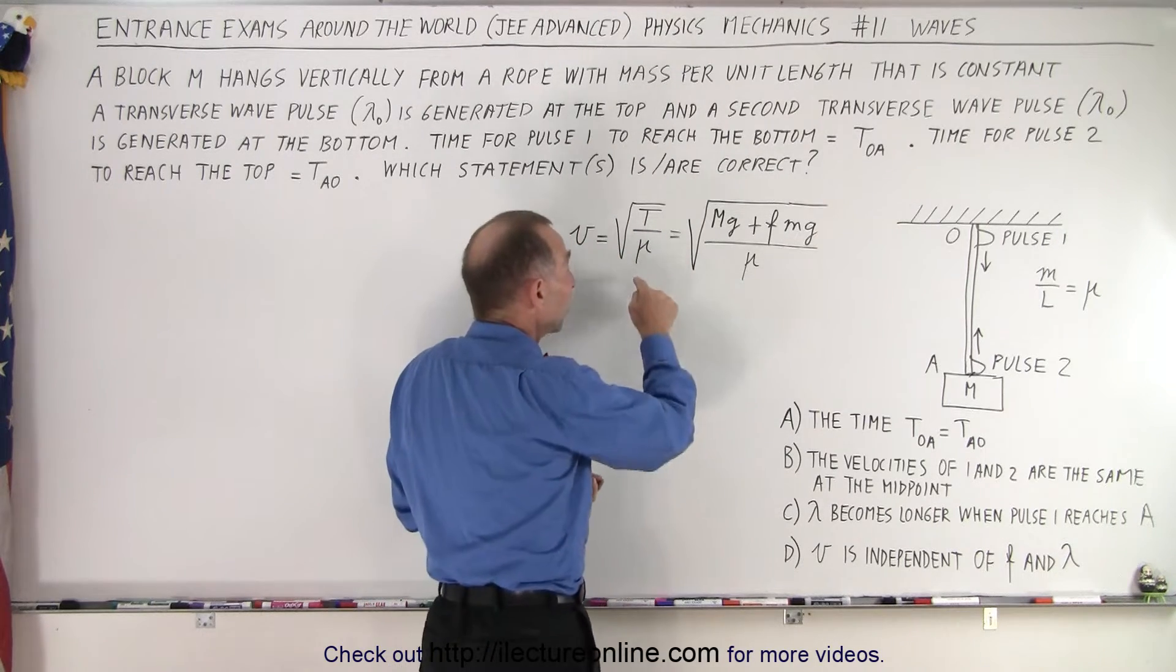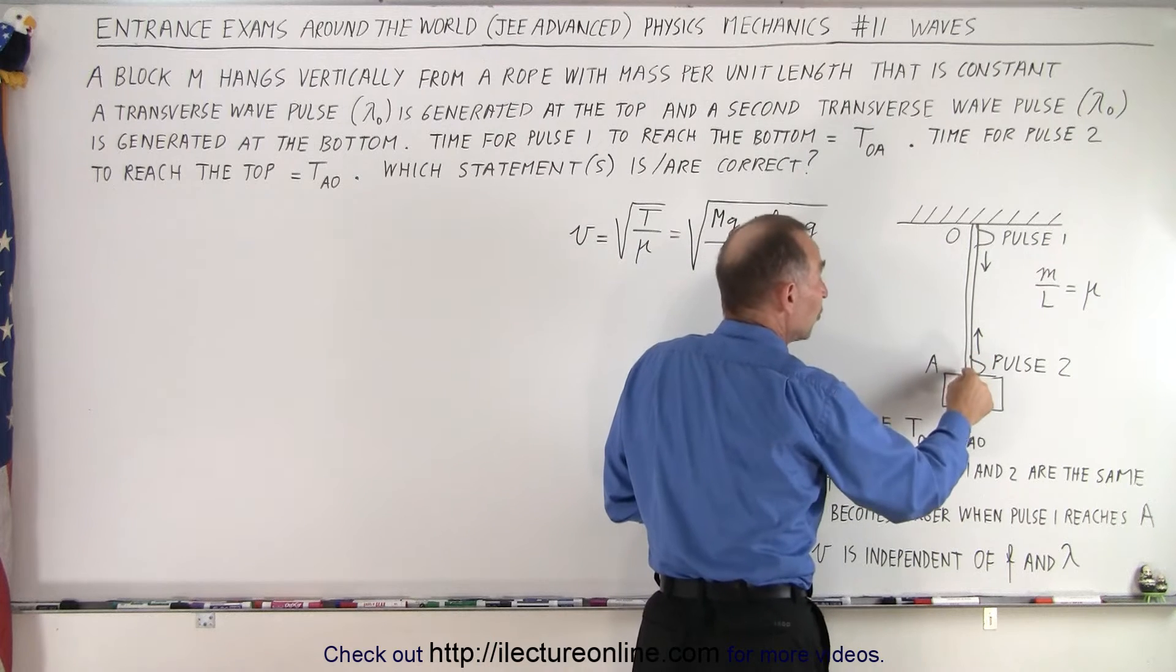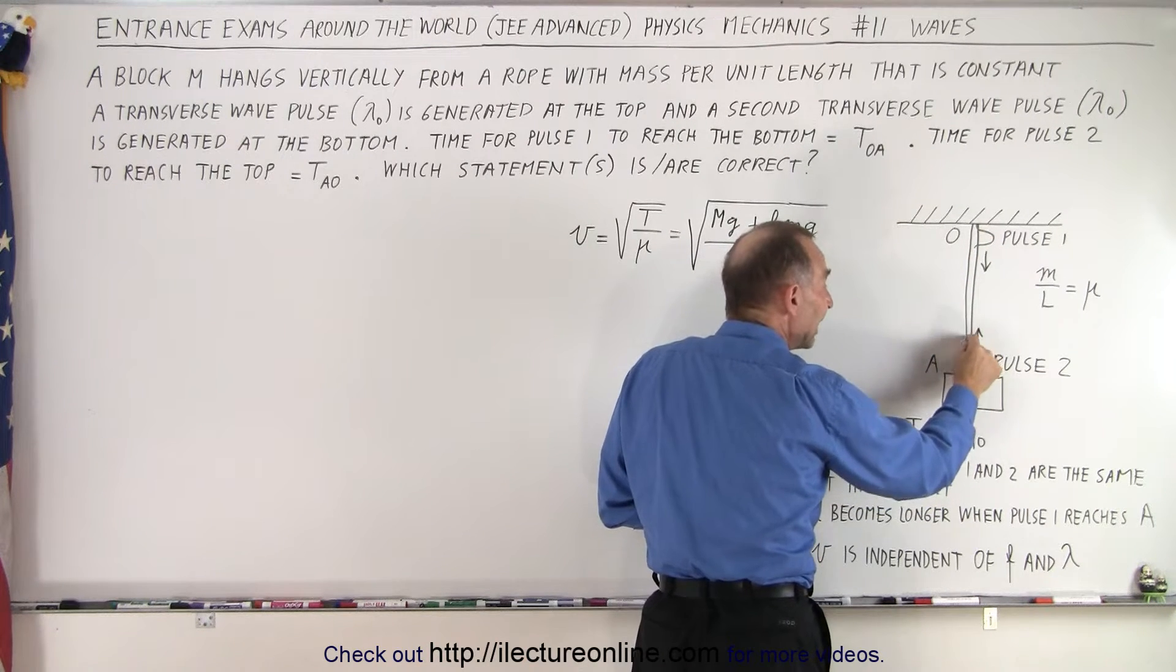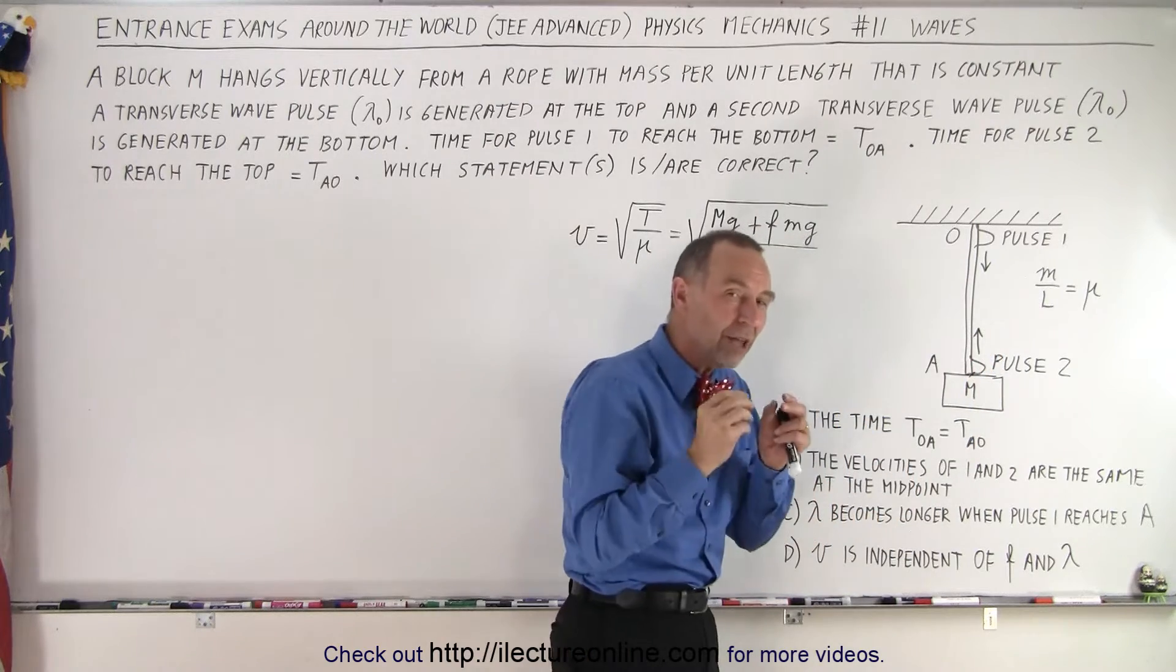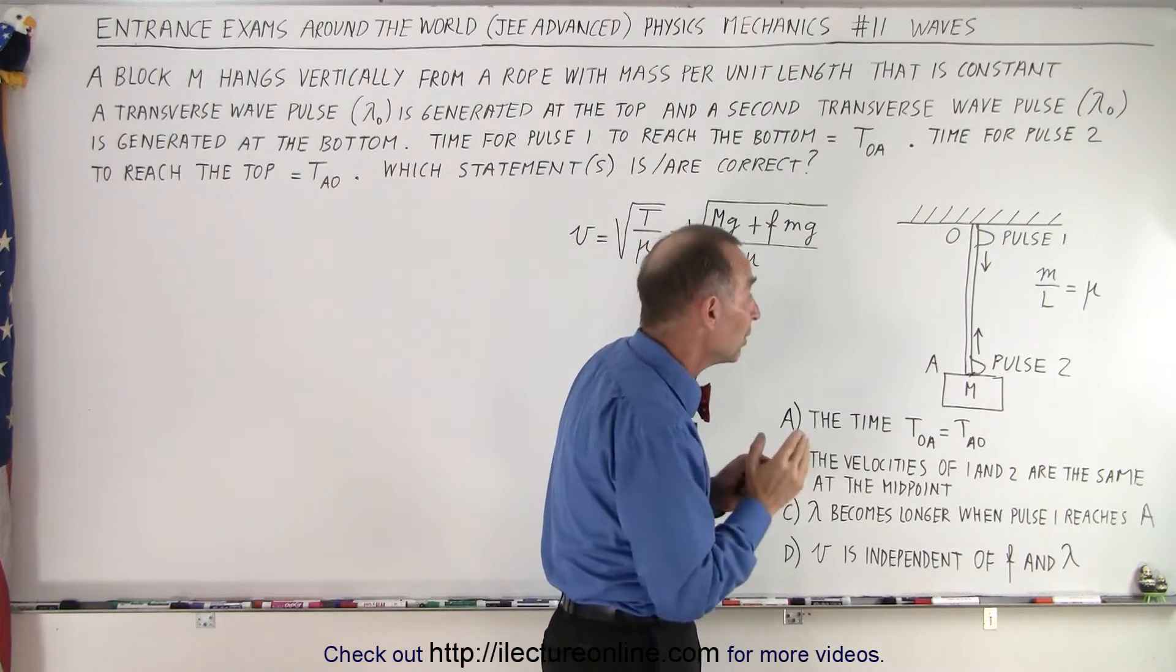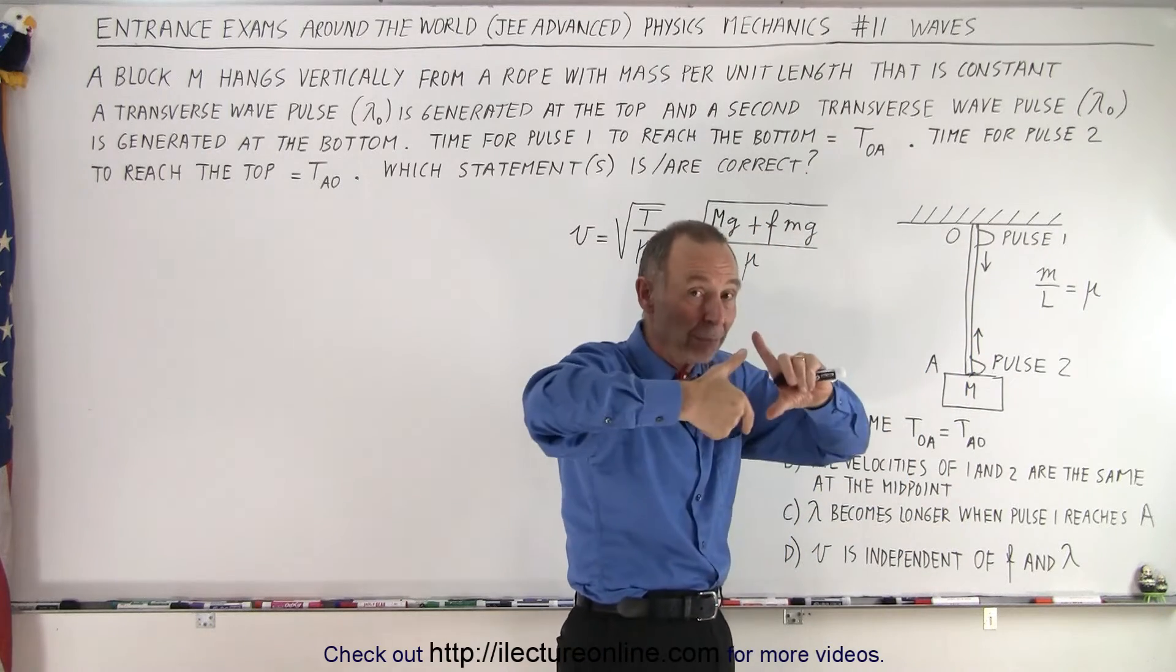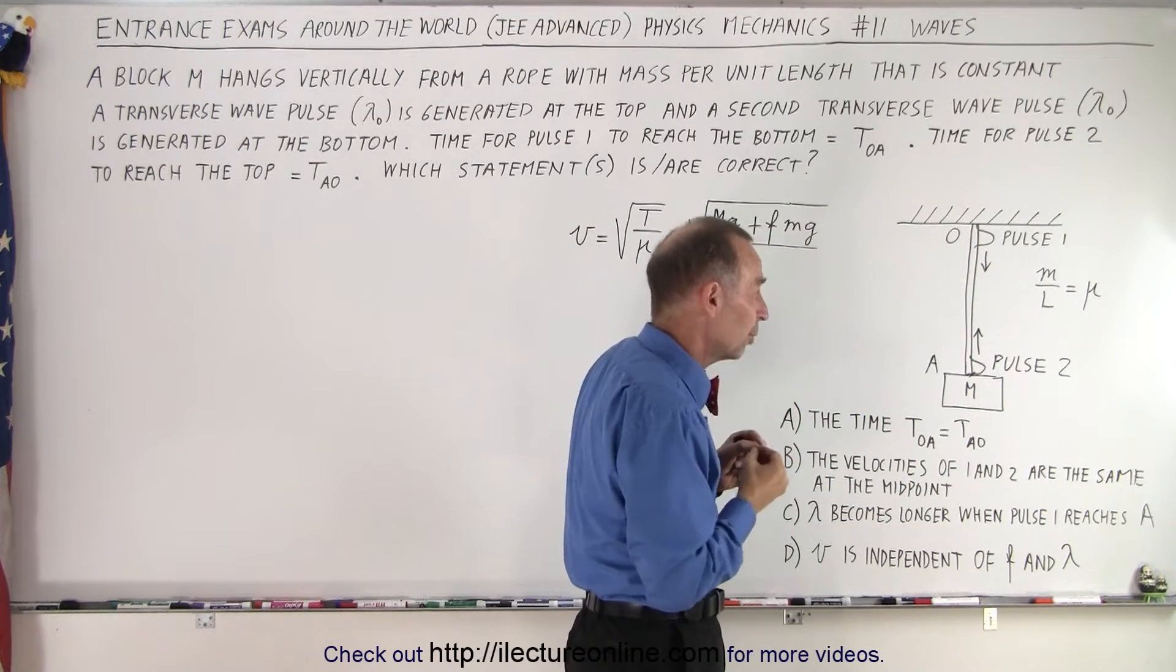The time will depend on the velocity, and we can see that the velocity will be the same for both pulses, no matter if we're on the way down or on the way up. At any point on the string, the velocity—the magnitude of the velocity—will be the same on the way down as it is on the way up, except of course there will be an opposite direction, but the magnitude will be the same.